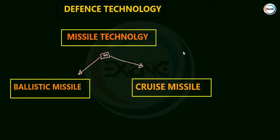Hello, this is Mayoor Sagar and welcome to Excellency IAS. We were talking about missile technology. In the very first part we saw that missiles are of two types: ballistic missiles and cruise missiles. Ballistic missile trajectory is parabolic and cruise missile trajectory is a straight line. In missile development programs there were two important programs: Integrated Guided Missile Development Program and Integrated Ballistic Missile Development Program. The IGMDP had five major components which were successfully achieved.